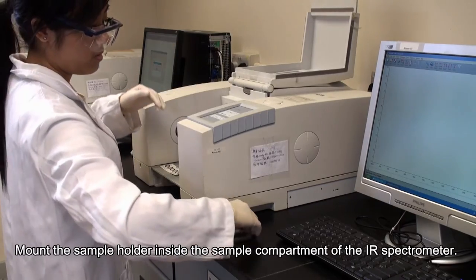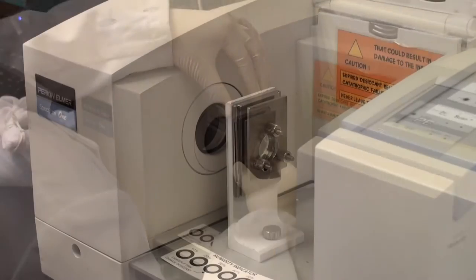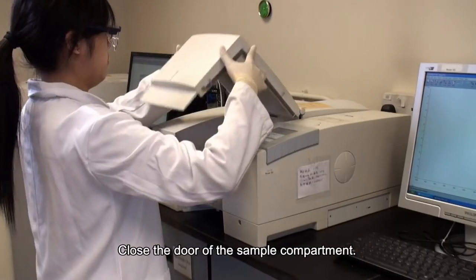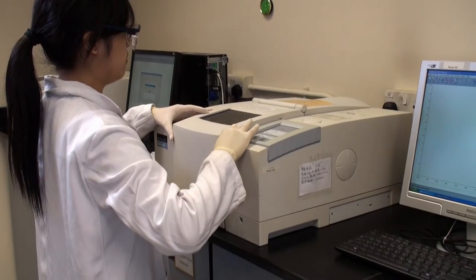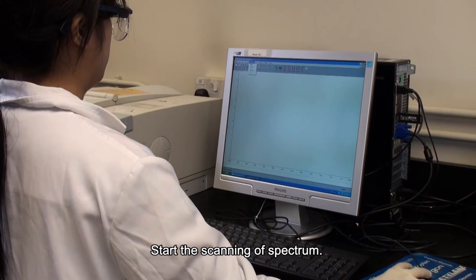Mount the sample holder inside the sample compartment of the IR spectrometer. Close the door of the sample compartment. Start the scanning of the spectrum.